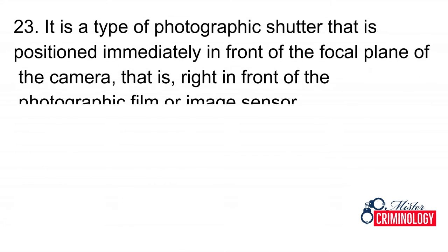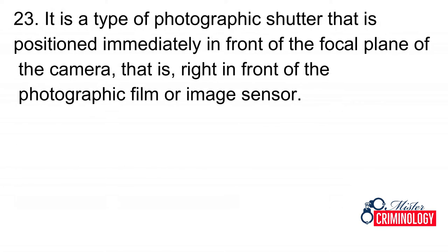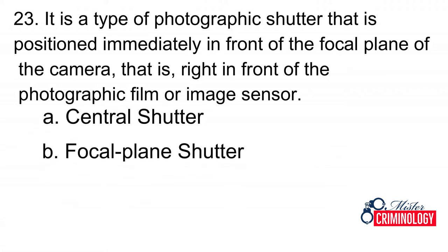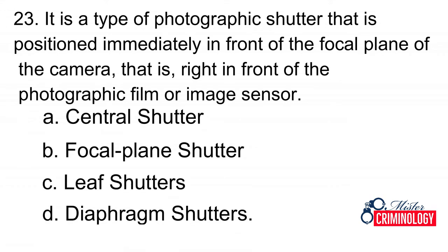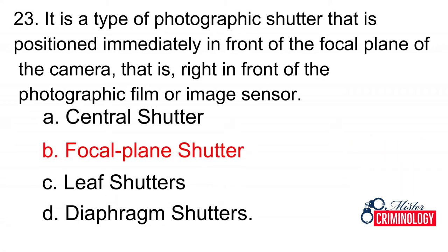Question 23: It is a type of photographic shutter that is positioned immediately in front of the focal plane of the camera, right in front of the photographic film or image sensor. A. Central shutter, B. Focal plane shutter, C. Leaf shutters, D. Diaphragm shutters. Answer: B. Focal plane shutter.